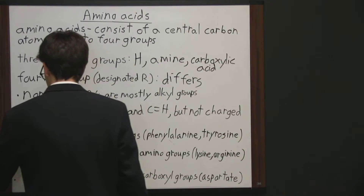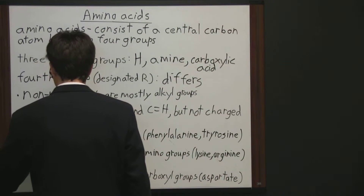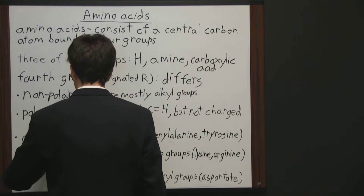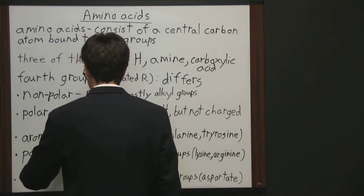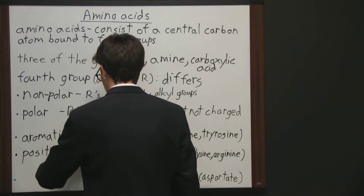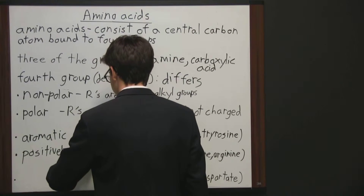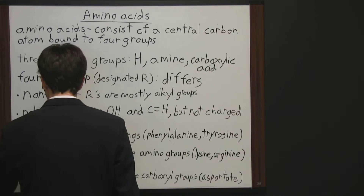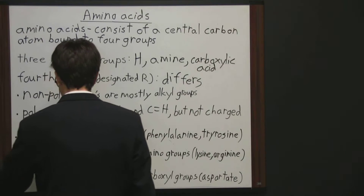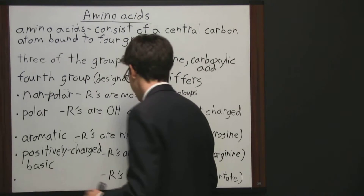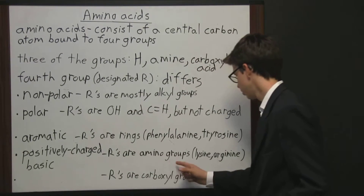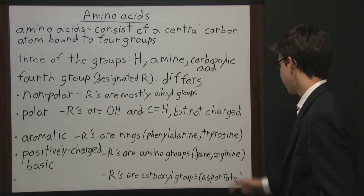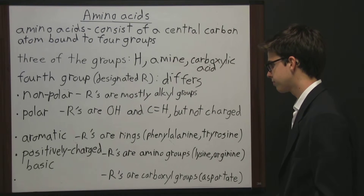The fourth group is positively charged, which we can also call basic — and by basic I don't mean simple, I mean the opposite of acidic. Here the R groups are amino groups, with examples like lysine and arginine.